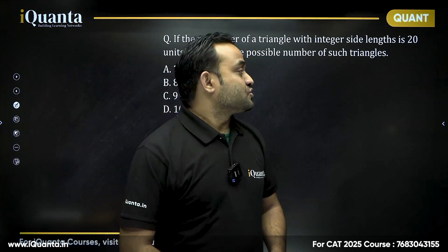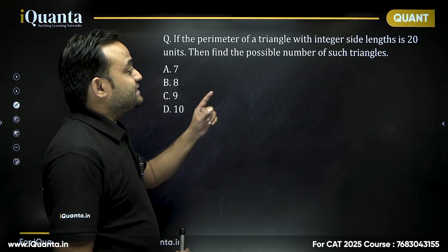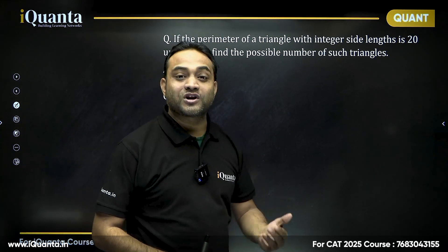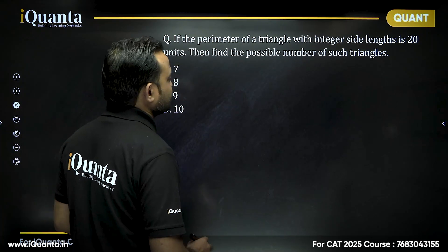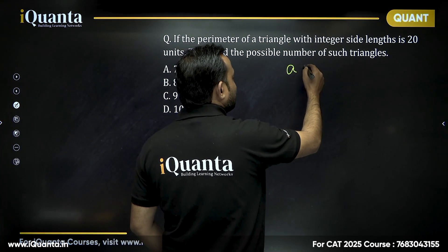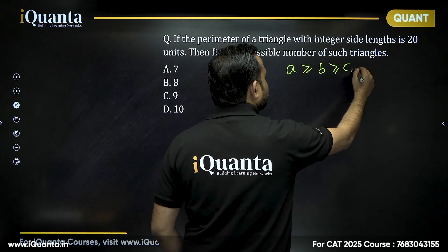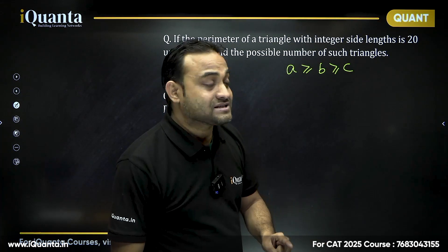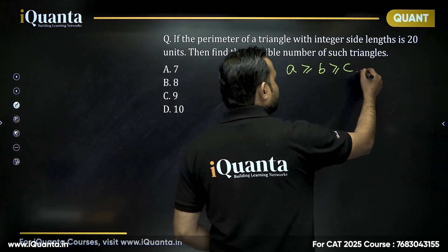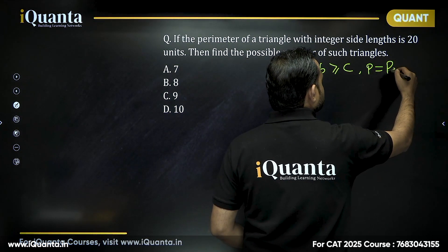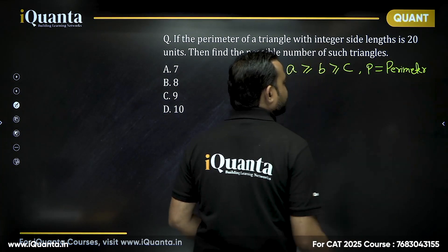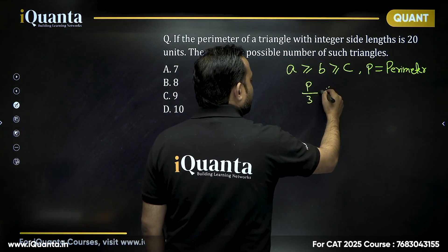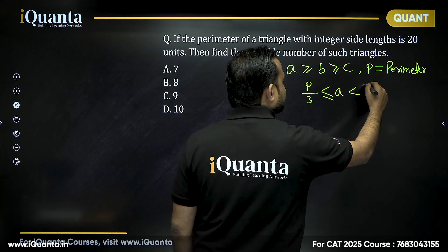Next question: if the perimeter of a triangle with integer side lengths is 20 units, then find the possible number of such triangles. From the previous video, if the sides are ordered as A ≥ B ≥ C, making A the greatest side, there is a key relation: A must satisfy P/3 ≤ A < P/2.